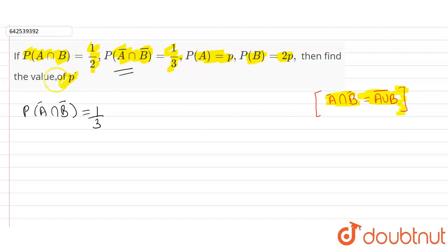We can write it as P(A∪B)̅ equals 1/3. Now, we can also write it as 1 - P(A∪B) equals 1/3.